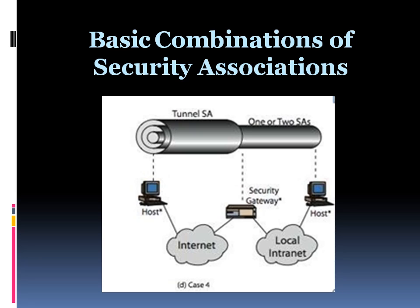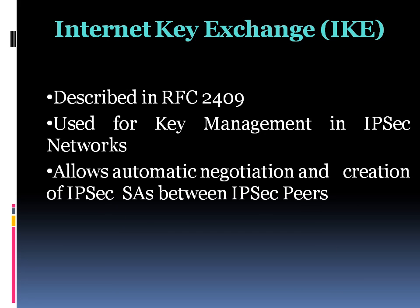Case 4 provides support for a remote host that uses the internet to reach an organization's firewall and then gain access to a server or workstation behind the firewall. Only tunnel mode is required between the remote host and the firewall. As in Case 1, one or two SAs may be used between the remote host and the local host, as illustrated in this figure. This concludes the discussion of the four basic combinations of Security Associations.